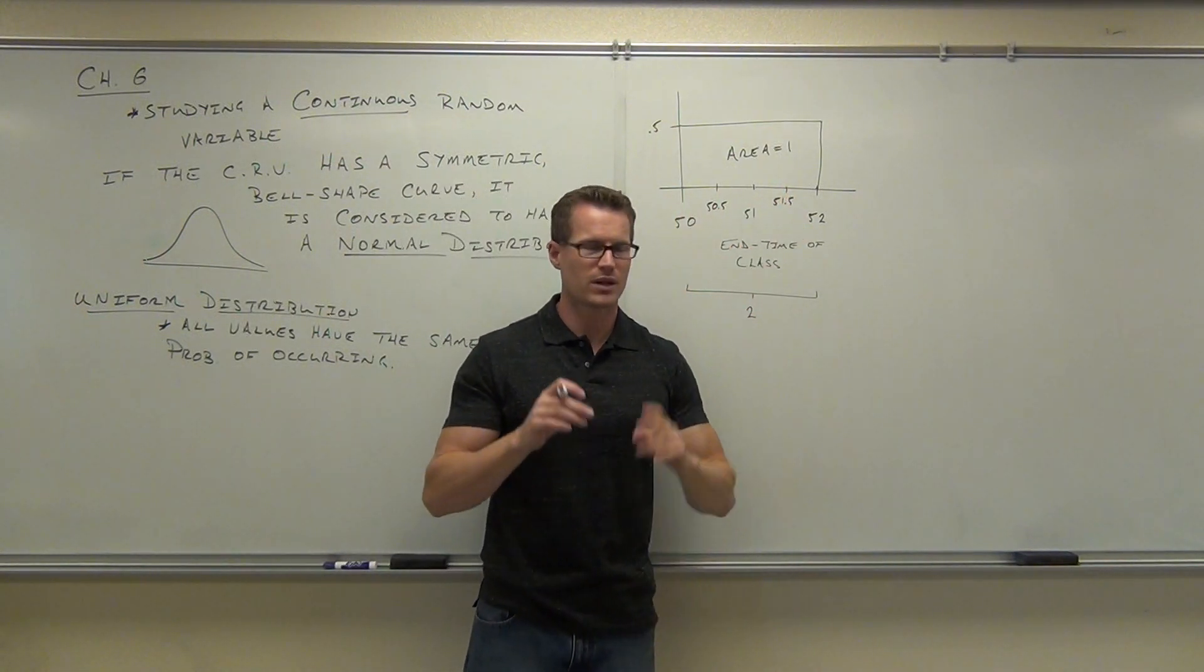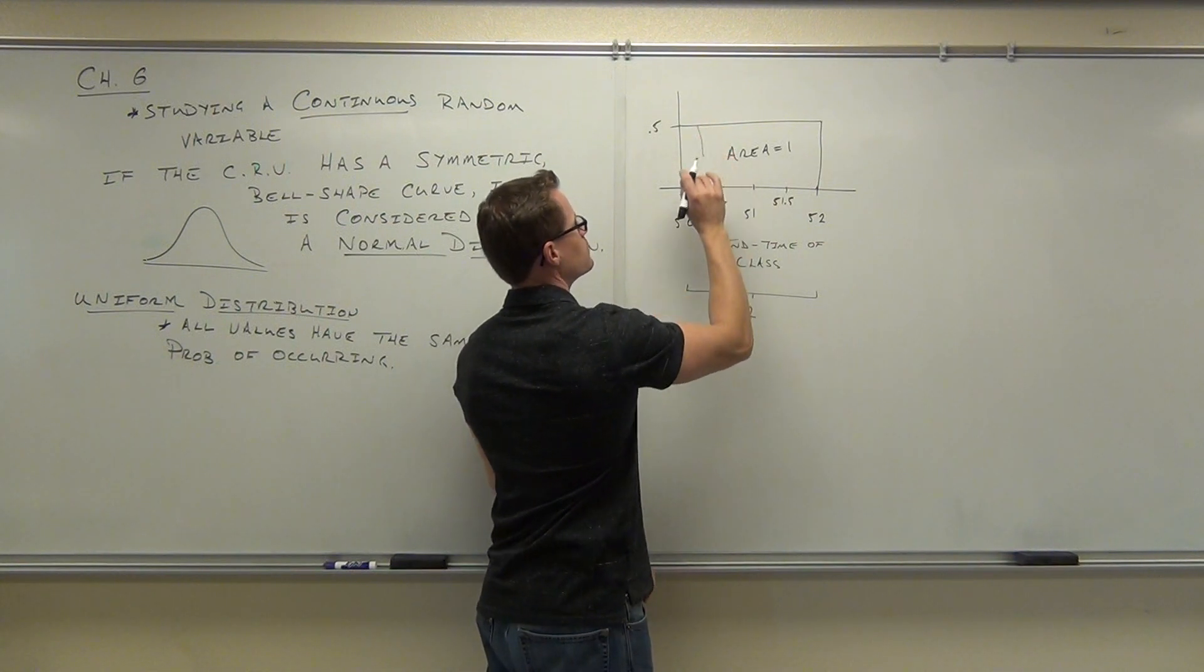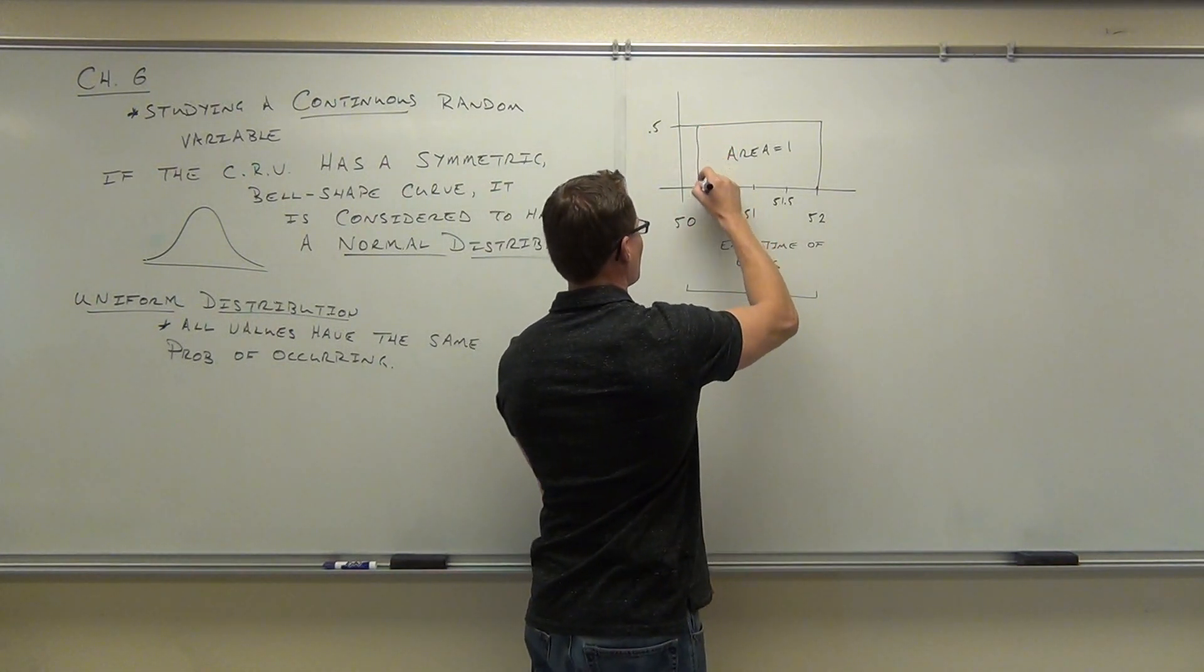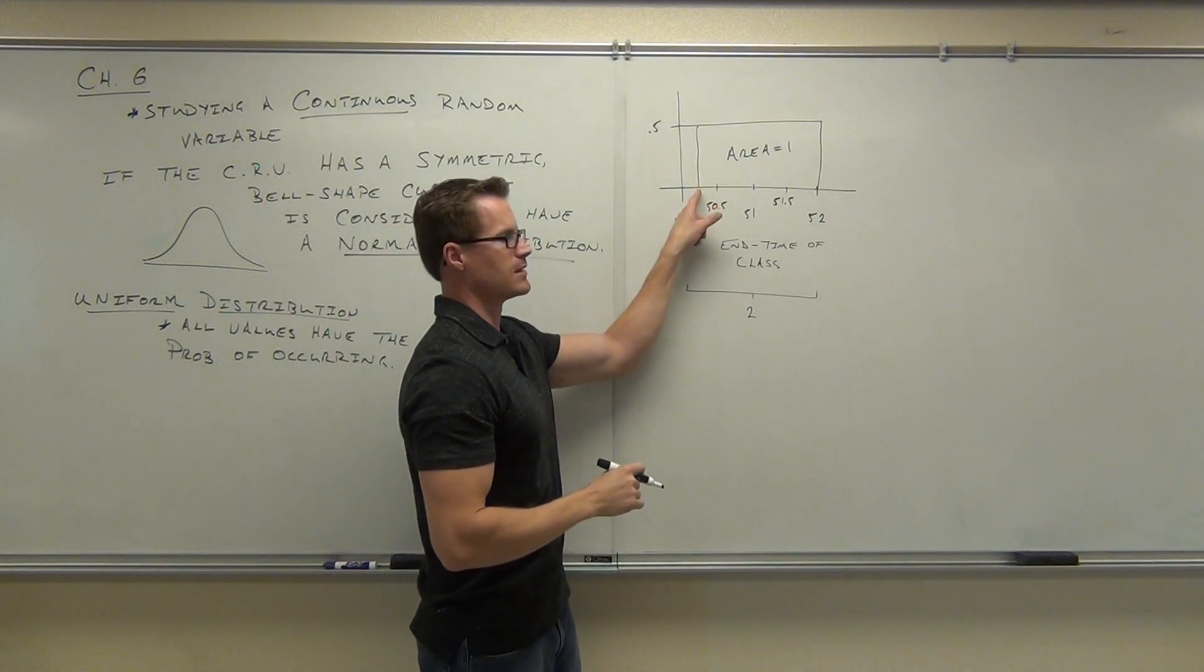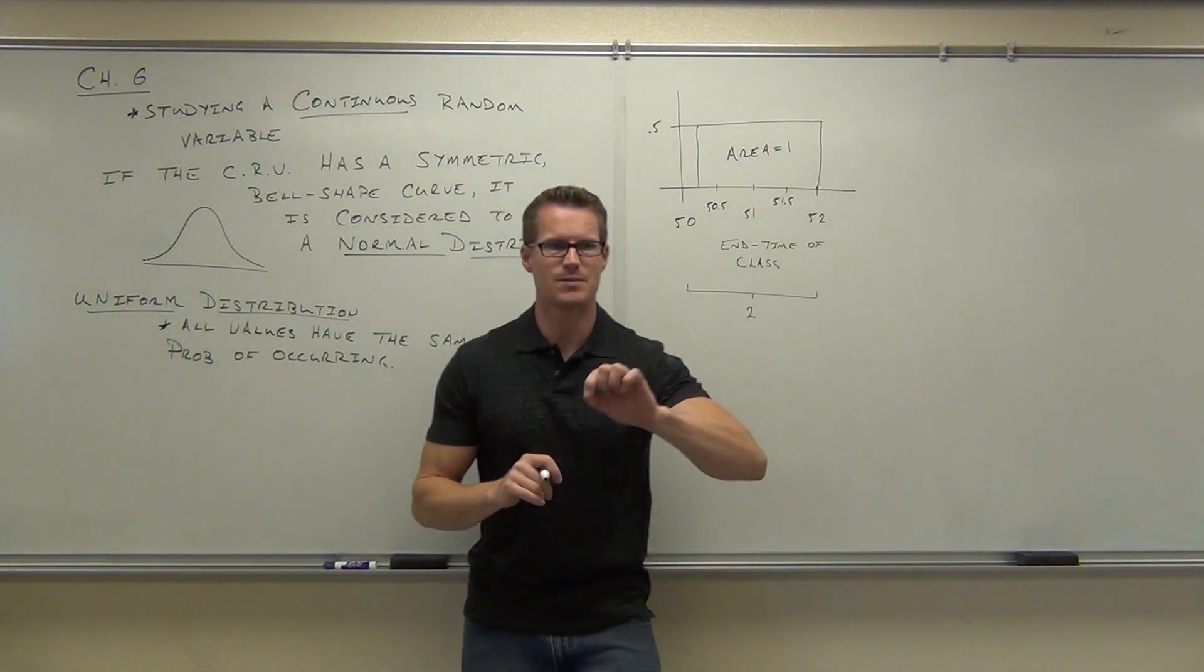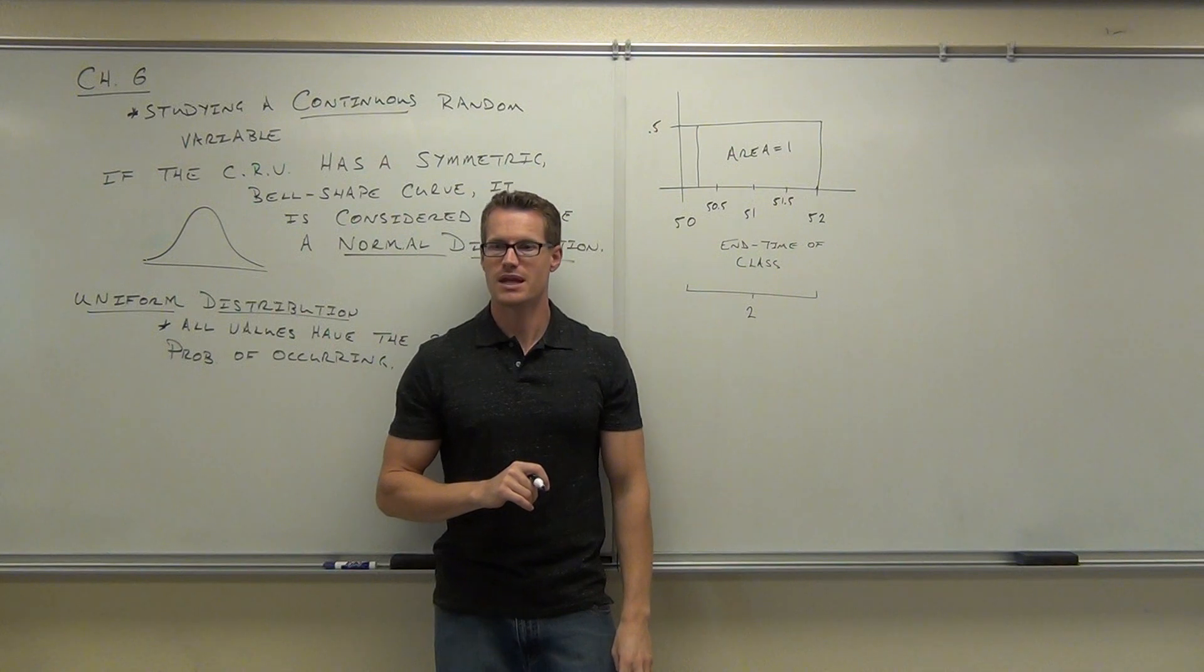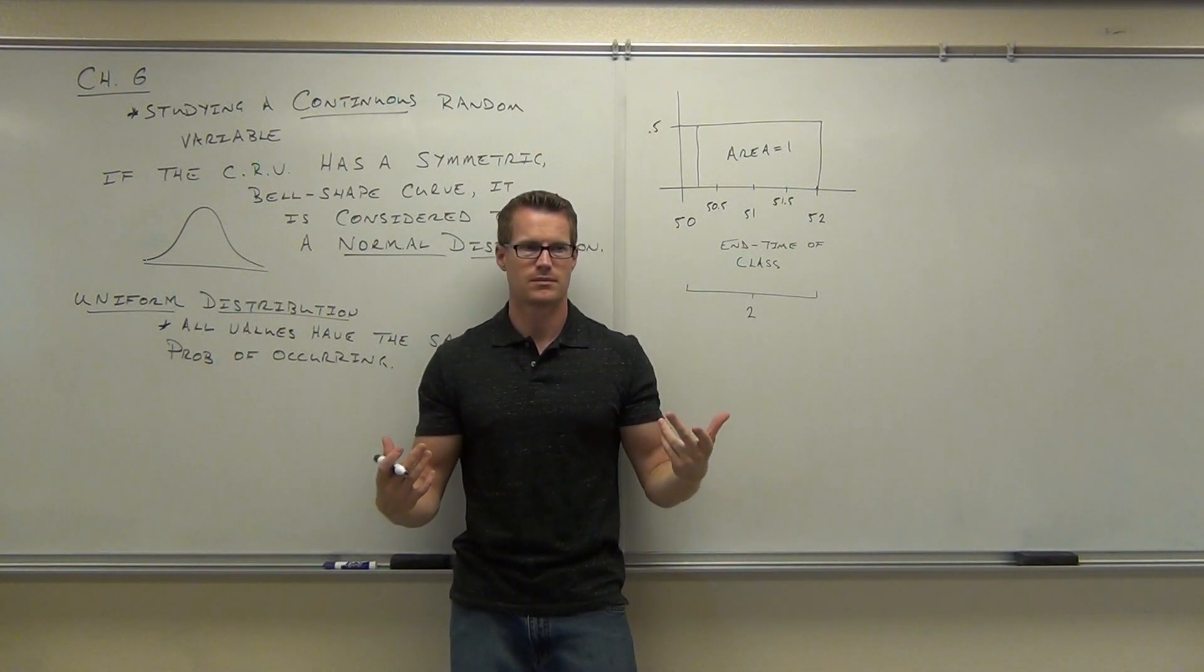In fact, if you think about this, I really do want you to think about this. This actually has a calculus concept behind it. What's the probability of getting exactly this time? Let's say this is 50.452783. What's the probability of getting exactly that time that the class ends on? Exactly that time. What do you think? How many possible values do I have between here and here? Don't tell me four. An infinite number. I'm picking one out of an infinite number. What's one divided by infinity?